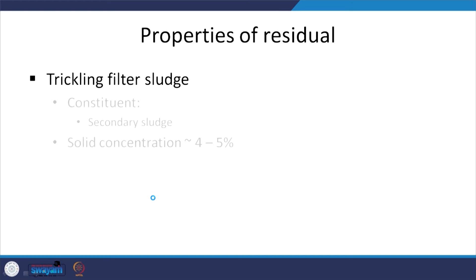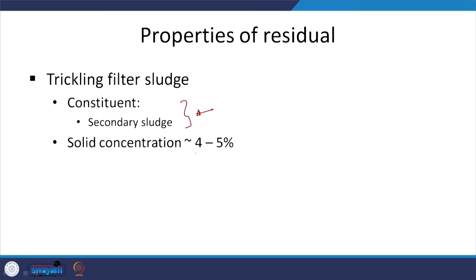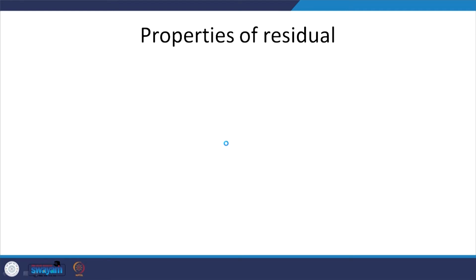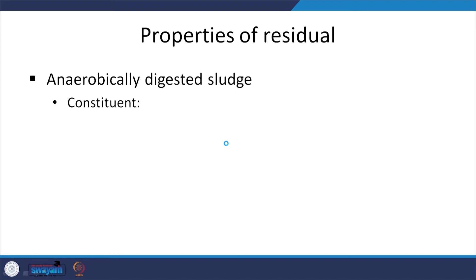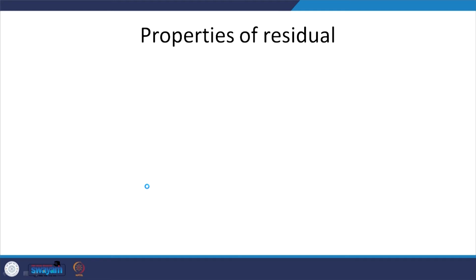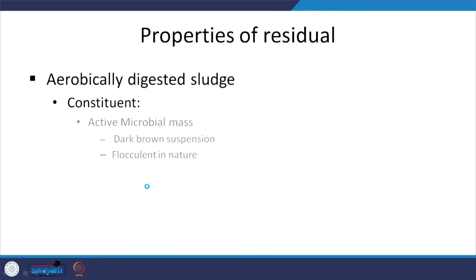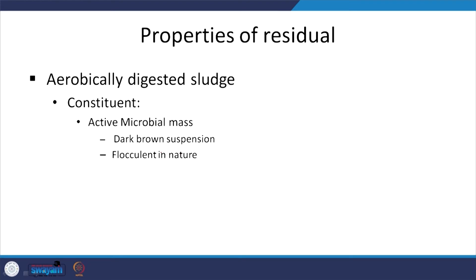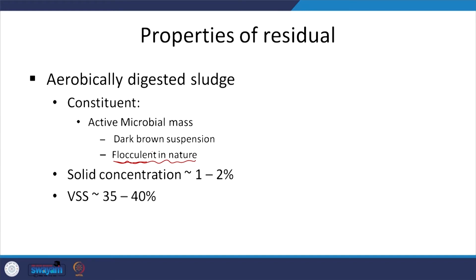Trickling filter sludge — which we did not look at — is similar to that of the secondary sludge, with solids concentration relatively higher and suspended solids in a similar range. Anaerobically digested sludge — what we have after digestion by anaerobic process — we still have a microbial mass but it is going to be relatively inert. Solids concentration is increasing and suspended solids percentage is decreasing. For aerobically digested sludge, the relevant mass or microbes are flocculent in nature, making dealing with that later difficult. Solids concentration is 1 to 2 percent and suspended solids relatively lower.